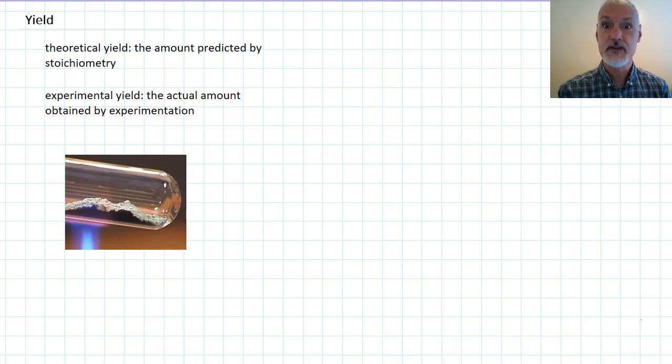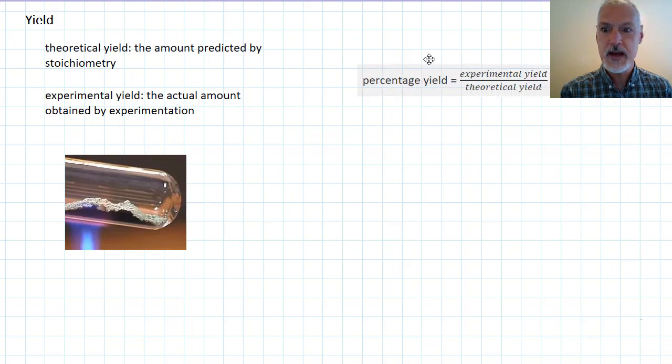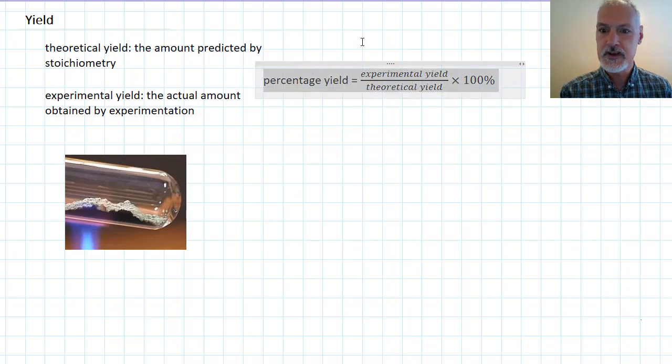This program is going to take a look at the concept of yield. Yield can be expressed many ways. First, we have our theoretical yield, that which is the amount that's predicted using stoichiometric calculations based on the amount of reactants present. We also have our experimental yield, that which is actually obtained through the course of an experiment. And then we have percentage yield, which is a way of comparing the two yields with each other.